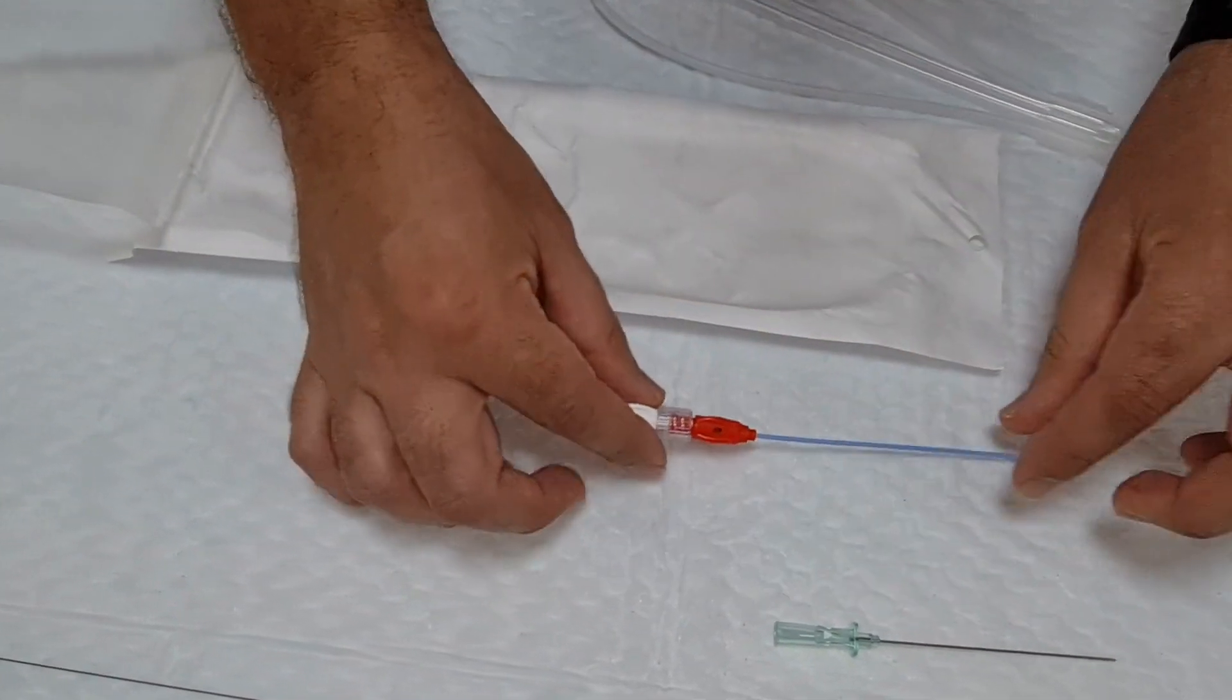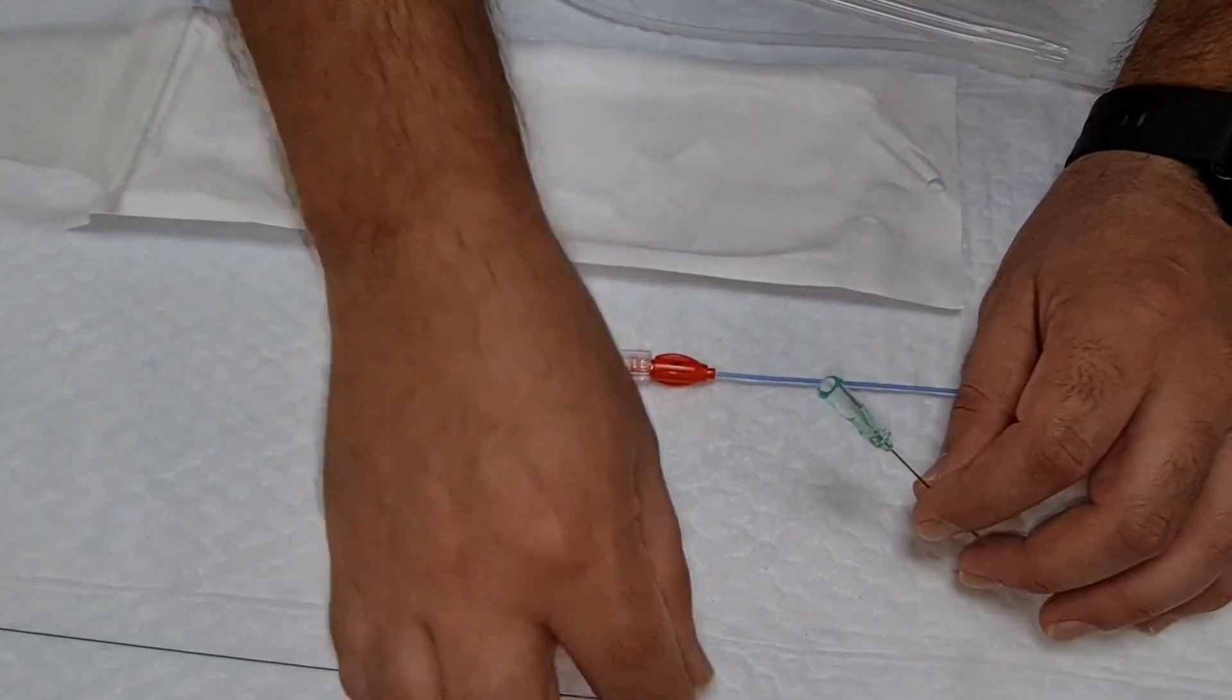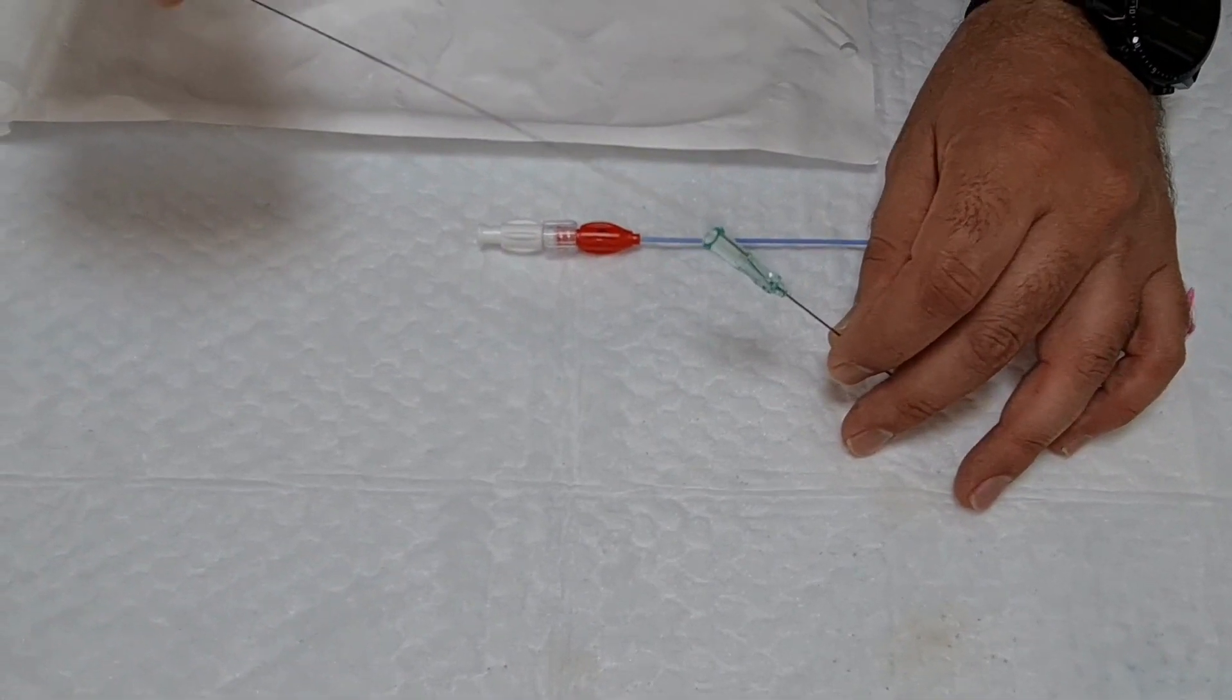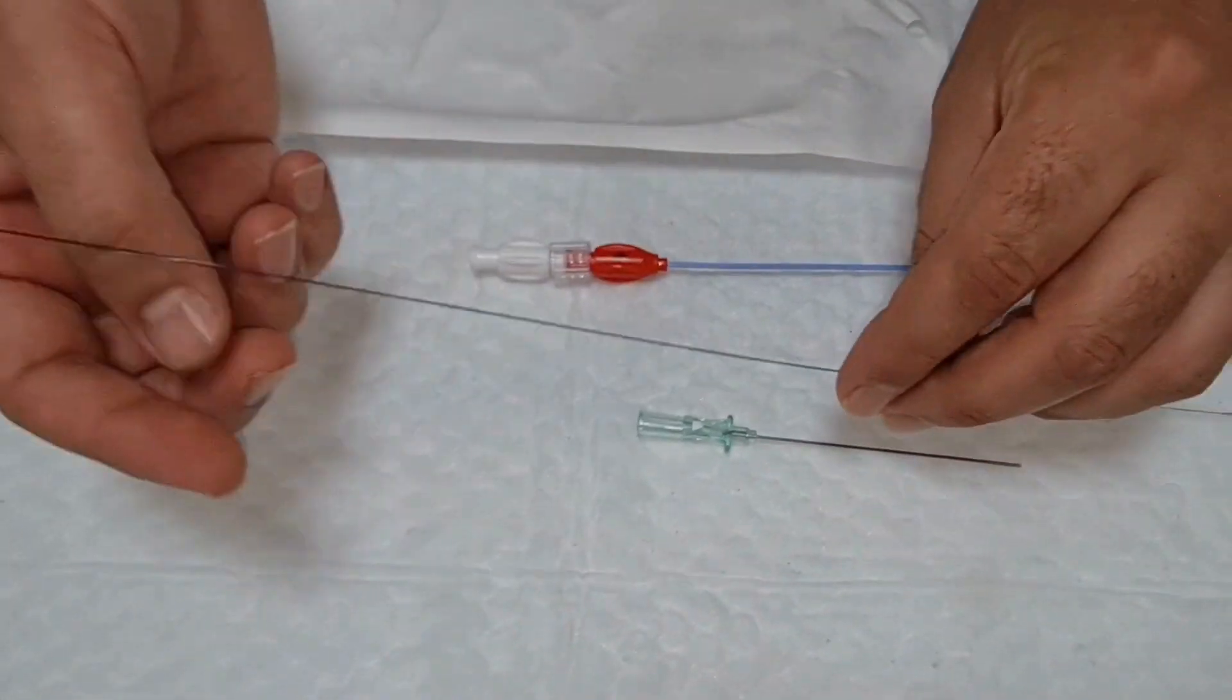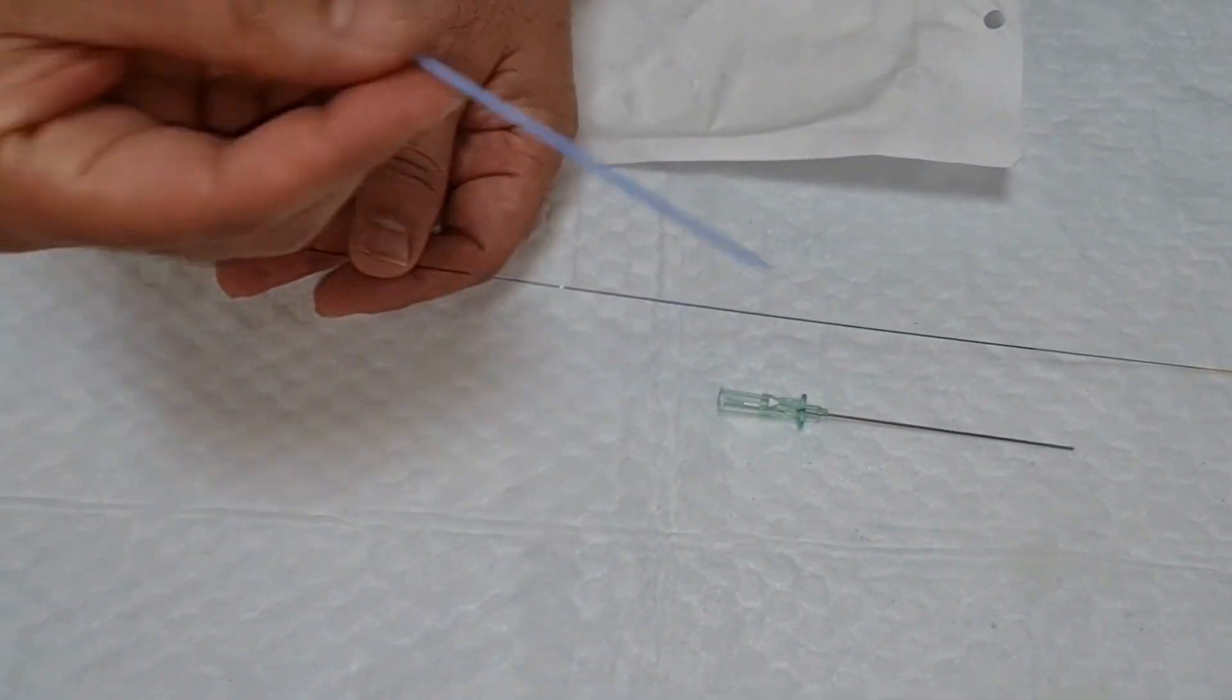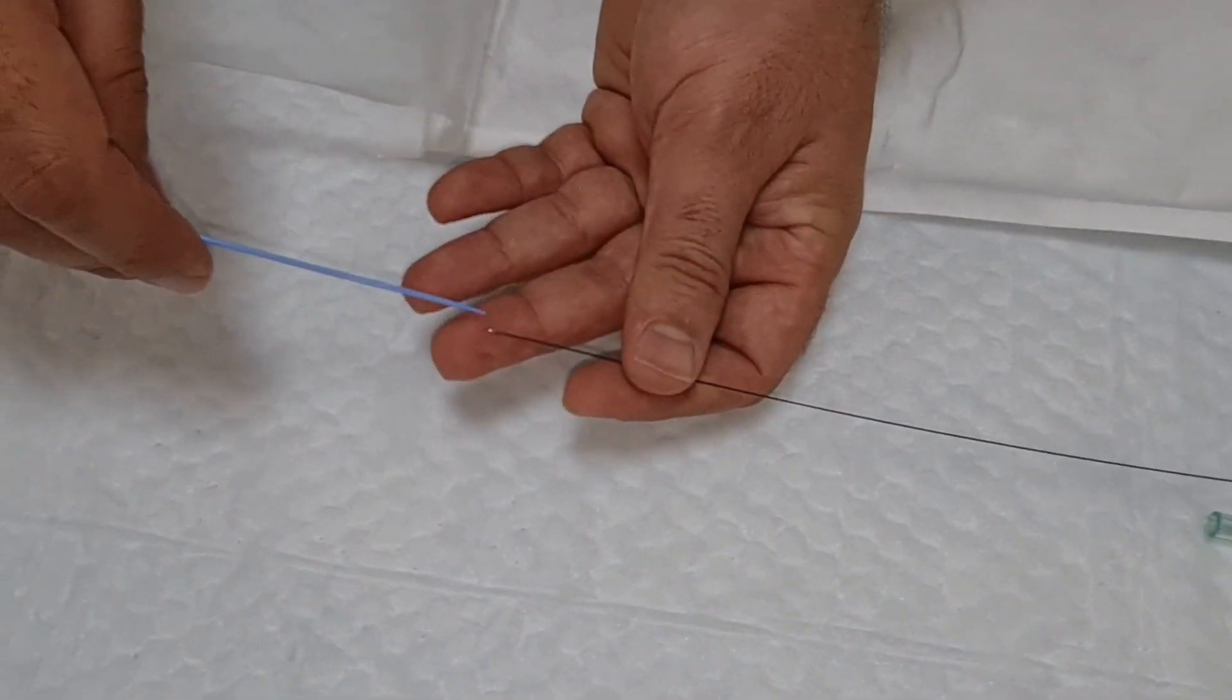Once you lock, keep it aside. So once the doctor takes the puncture, the wire goes inside the needle. When it goes inside the needle, then you have the micropuncture to load over the wire.